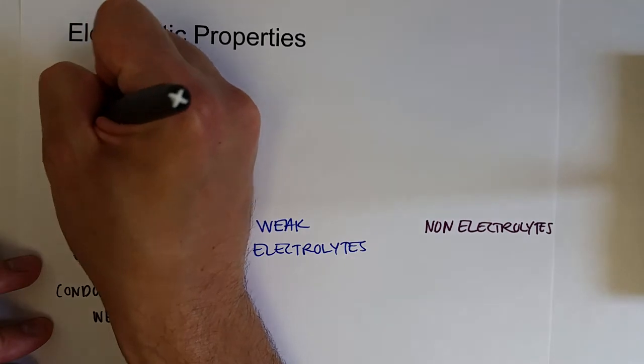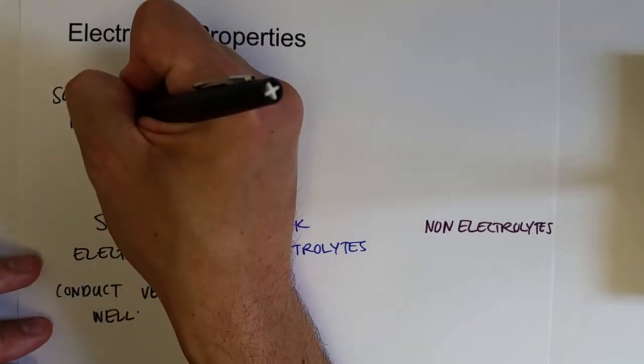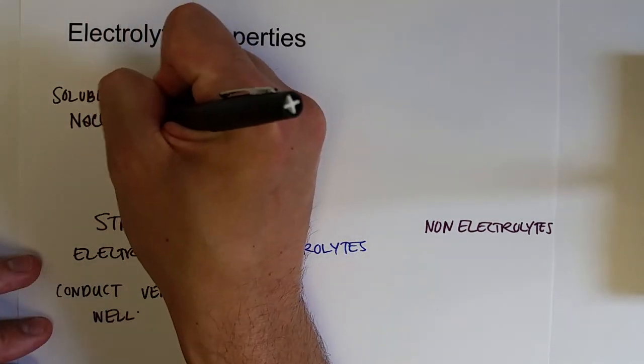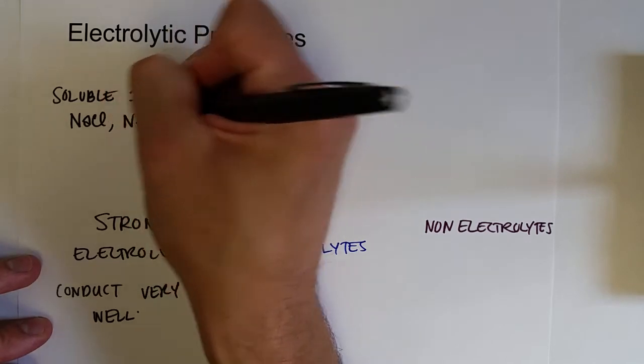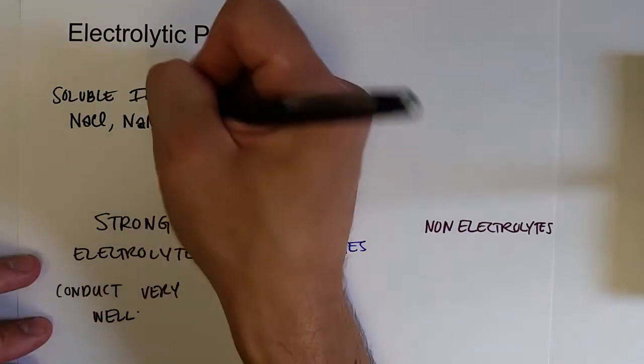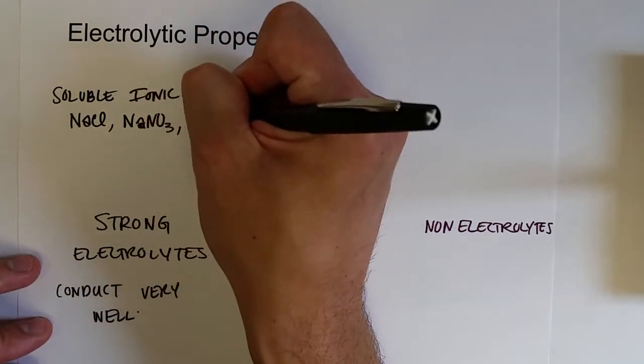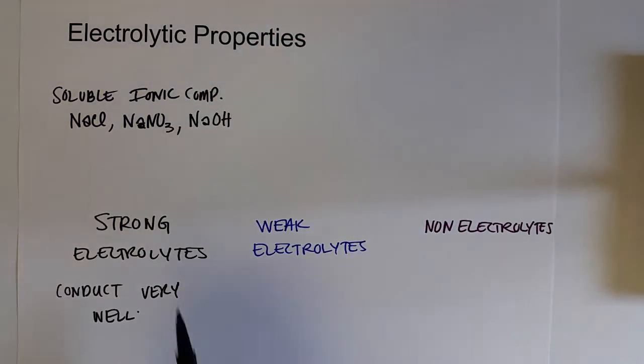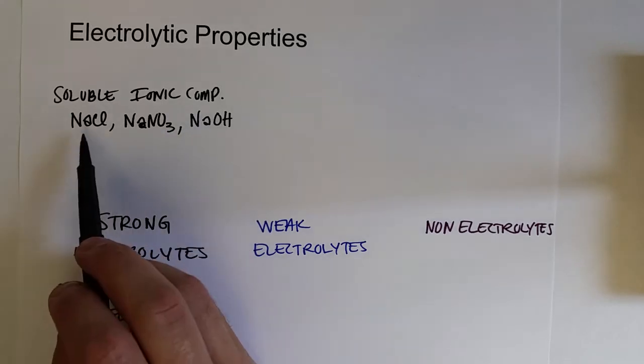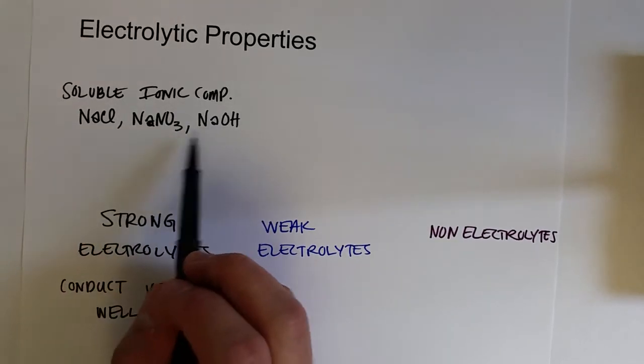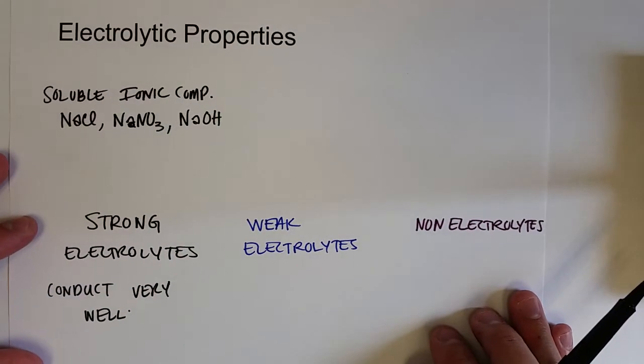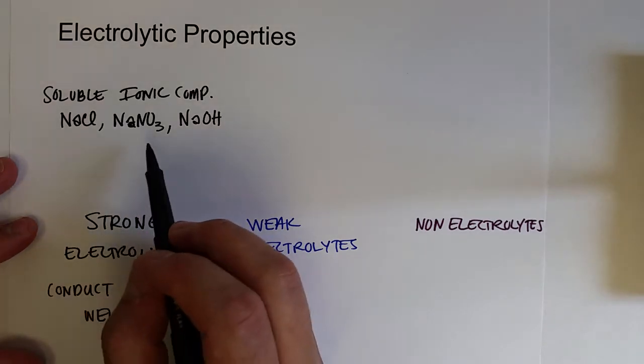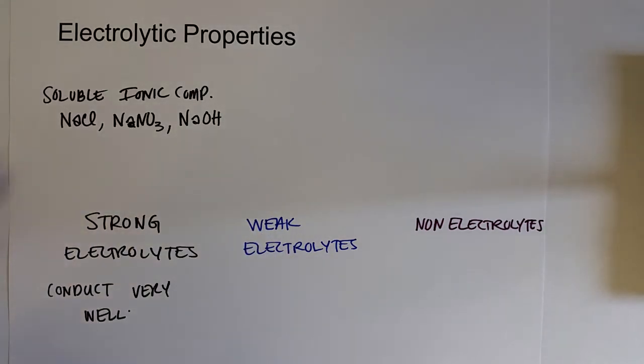Like sodium chloride, sodium nitrate, and then of course our strong base types are soluble hydroxides, sodium hydroxide. So all of those compounds dissociate 100%, forming 100% of the ions, no ionic compounds left. And so those are strong electrolytes.